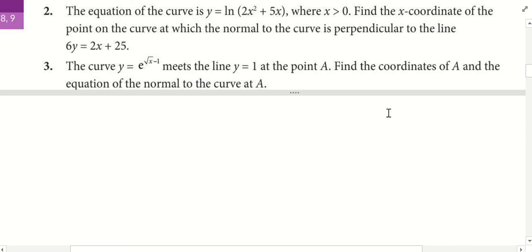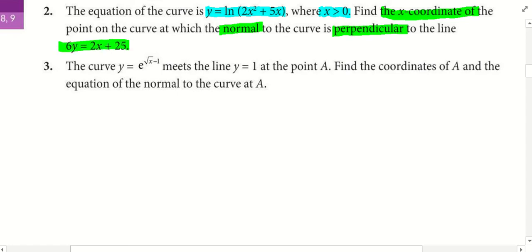Okay, same thing is another question on equations. What I see is a few things. The equation is given. Take note, x must be greater than 0. What is it we need to find? We need to find the x-coordinate where the normal is perpendicular to this line. The blue part is the info, the green part is what we need to find out.